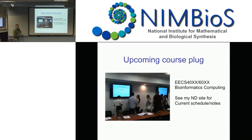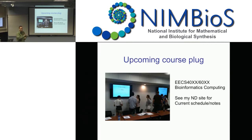Shameless plug: I will be teaching bioinformatics for EECS. It'll be the first time that EECS will offer that class. I do a lot of active learning — we have a classroom where the walls are all whiteboard, and I give my students markers and have them go at it. So if you're interested in doing more computer science-oriented bioinformatics, the course will be cross-listed for both undergraduate and graduate students. You need some programming experience — that's really the only requirement.